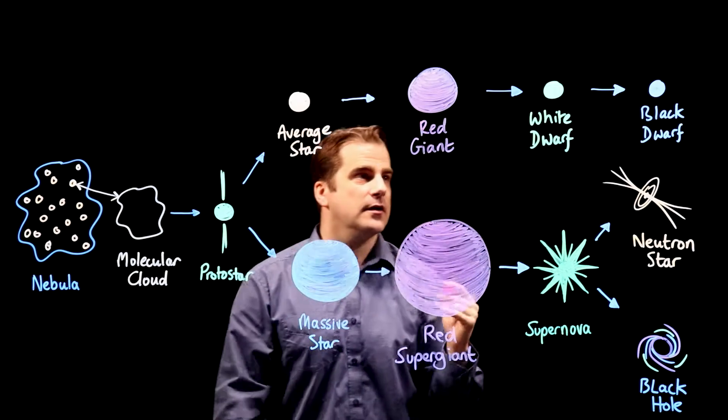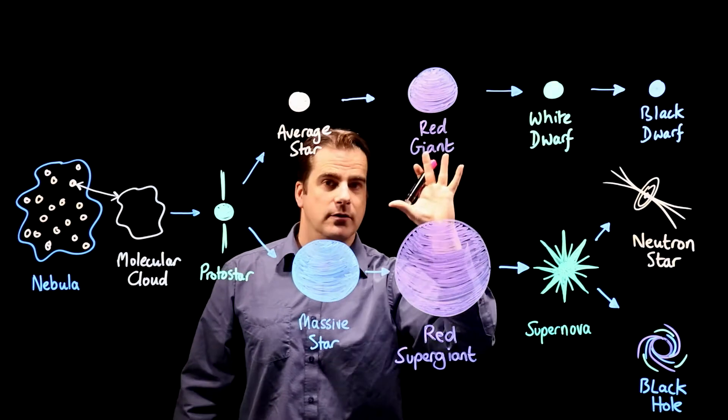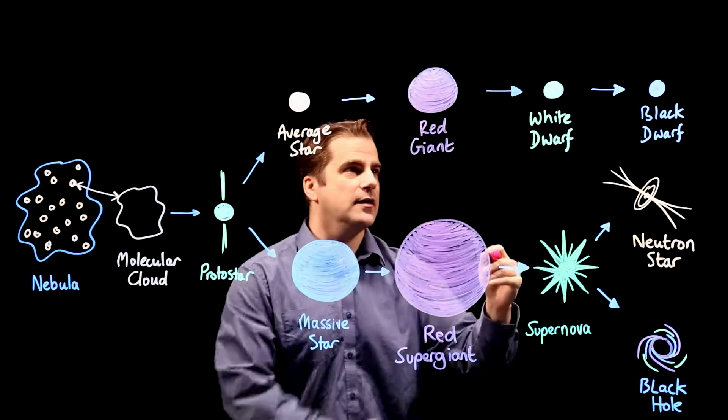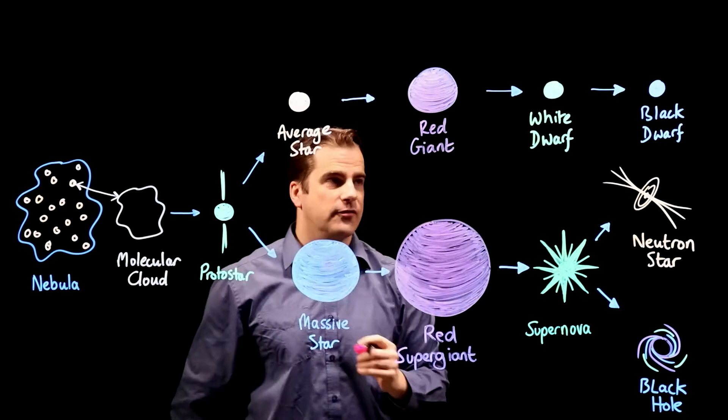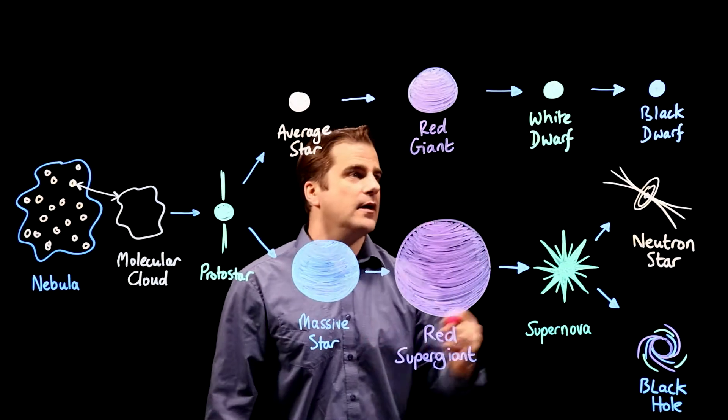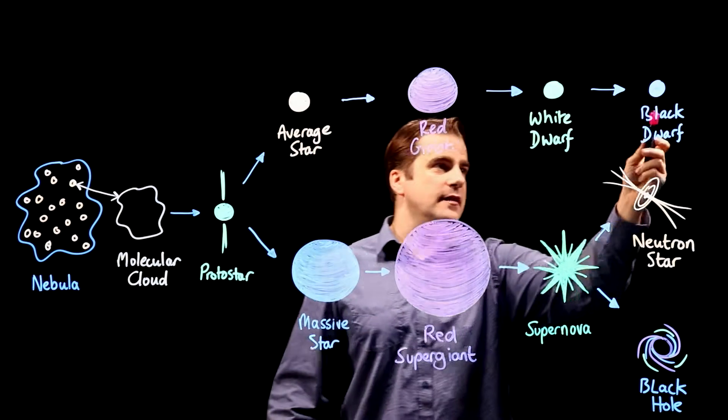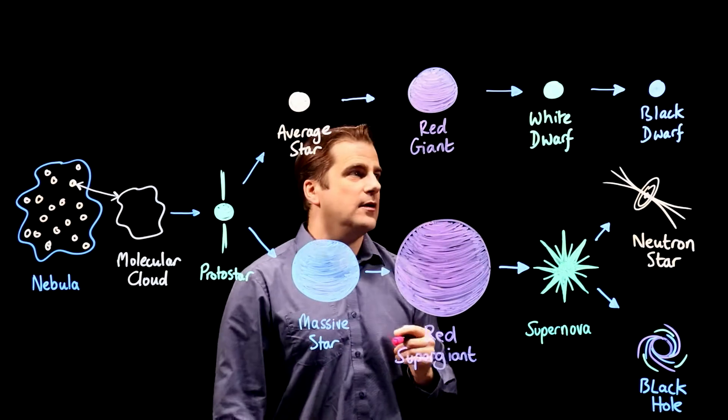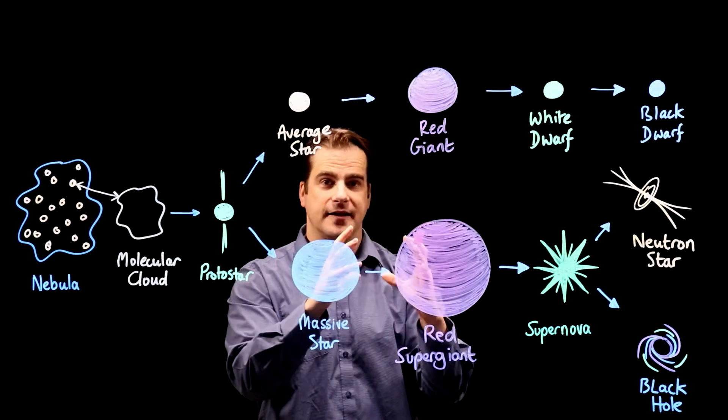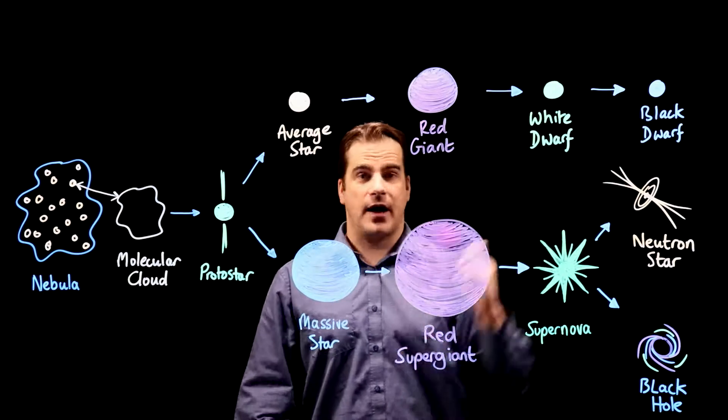It's also still very hot. It's not burning hydrogen or doing any fusion anymore but it's still very hot. So that's a white dwarf and it sits there and slowly cools down. And as it gets cooler and dimmer it turns into a black dwarf which is just a ball of dense cool matter sitting there in space. So that's what's going to happen to our Sun.